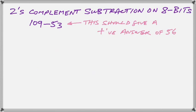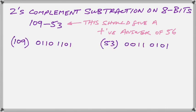Let's do another 2's complement subtraction on 8 bits. But this time we're going to do one that has a positive answer. So that means we're going to subtract a smaller number from a larger number. We're going to take 53 from 109. So once again, we are following our plan. We write down our numbers and we convert them to binary.